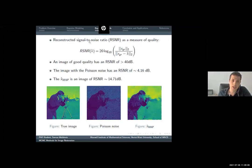Let's give an example. Here we are going to use what we call reconstructed signal-to-noise ratio, or RSNR. It is a measure of quality. Take it as granted that an image of good quality has an RSNR of more than 40 decibel. The Poisson image here has an RSNR of 4, and the MAP estimator has an RSNR of 14.